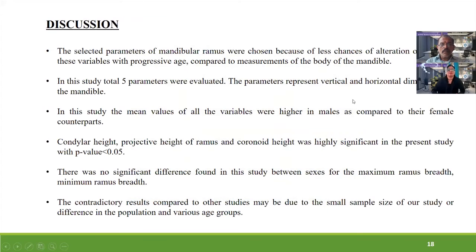In the discussion, five parameters representing the vertical and horizontal dimensions of the mandible were evaluated. Condylar height, projective height of ramus, and coronoid height were found to be highly significant with P-values less than 0.05. No significant difference was found in maximum ramus breadth and minimum ramus breadth. These results are somewhat contradictory to some studies where all five parameters were significant, possibly due to our small sample size or differences in population and age groups.